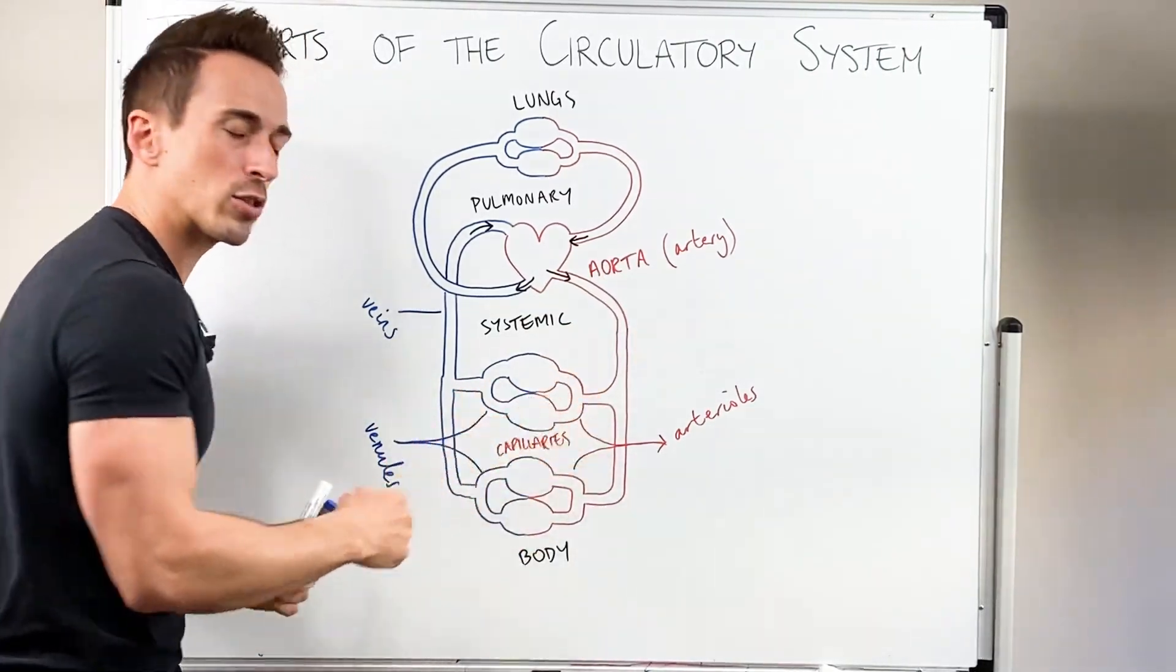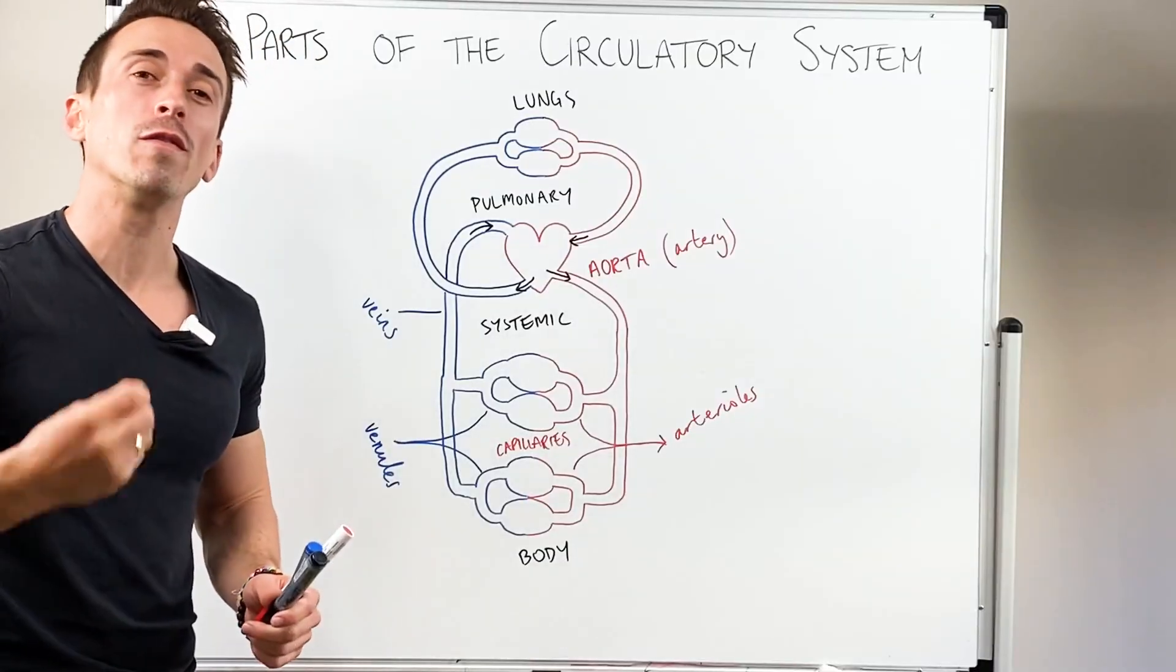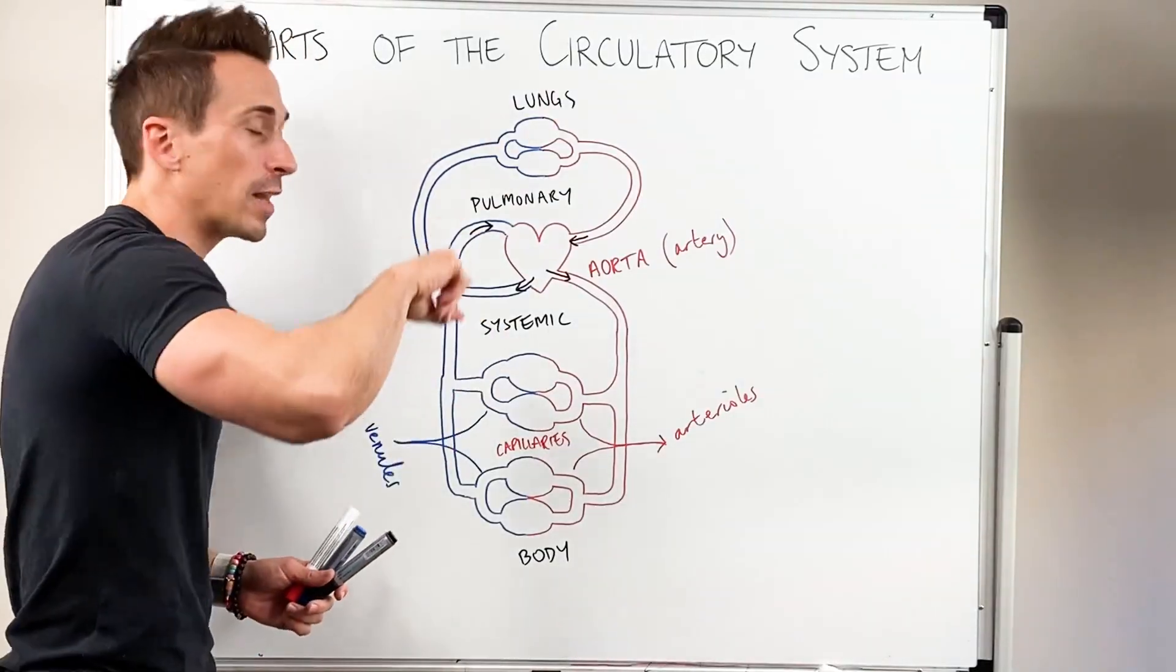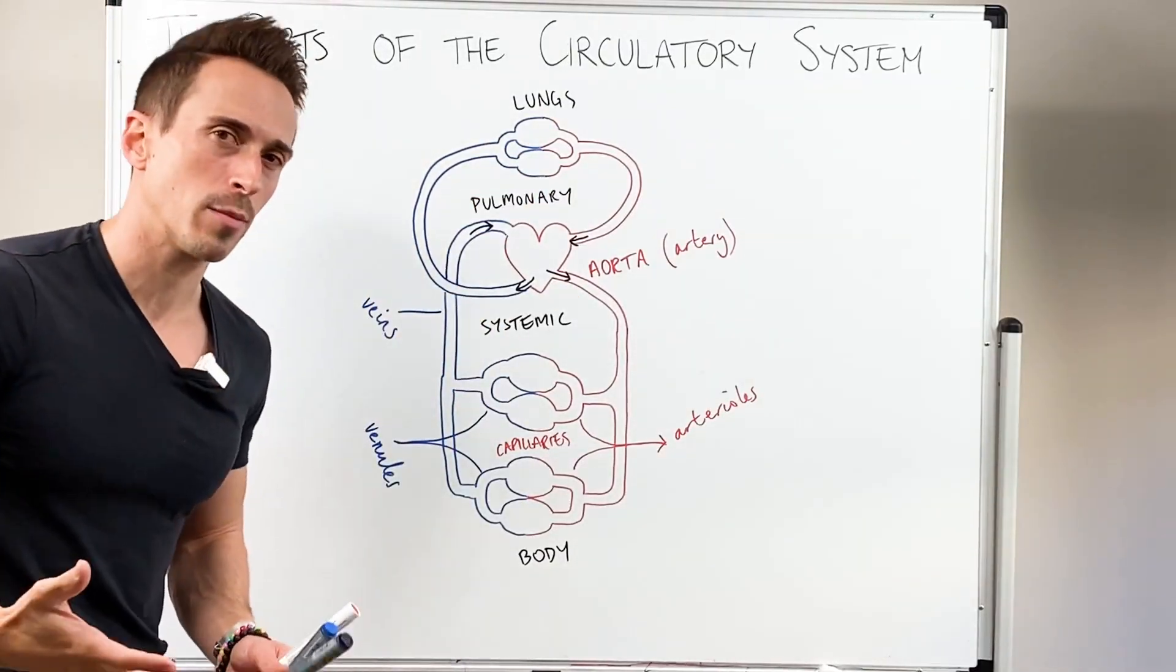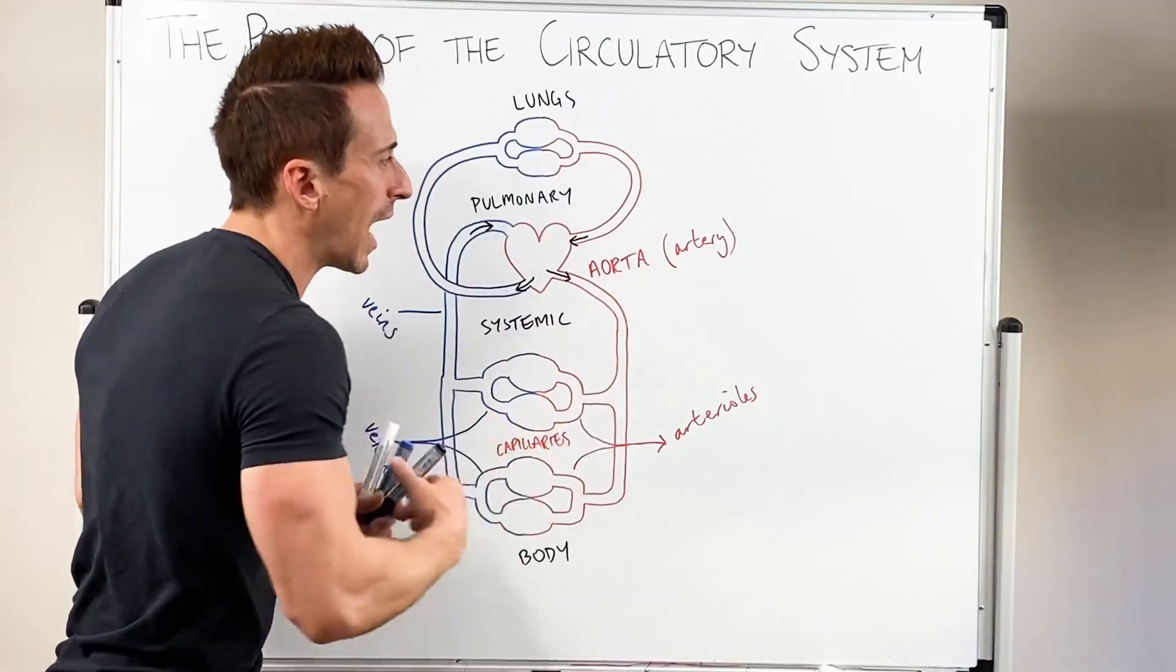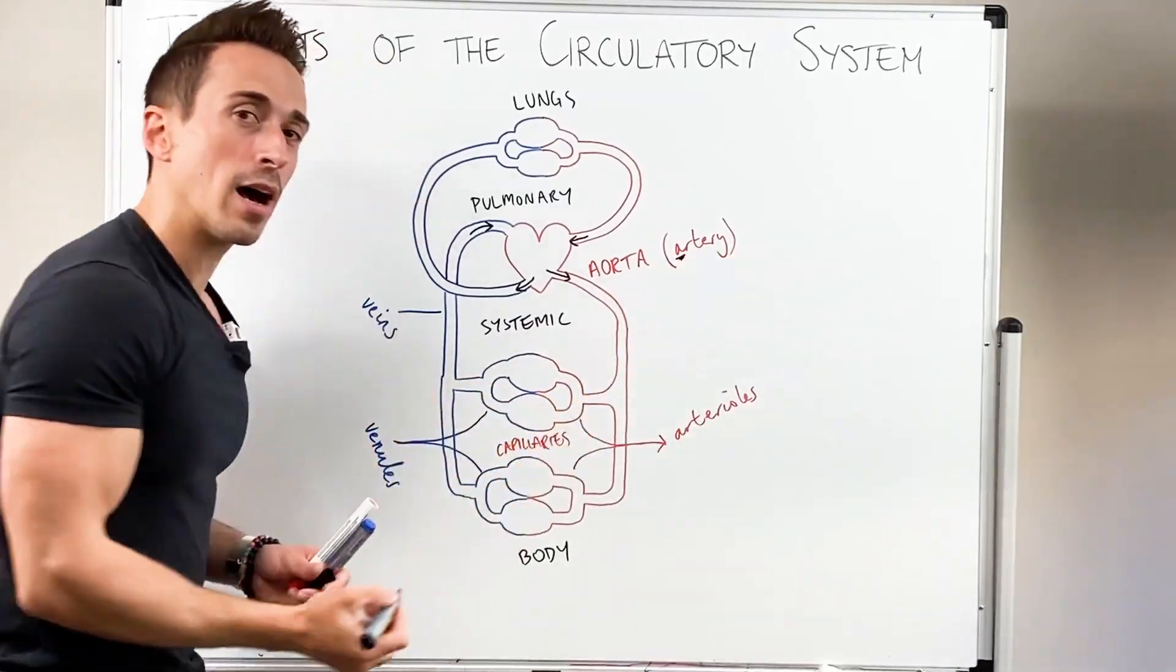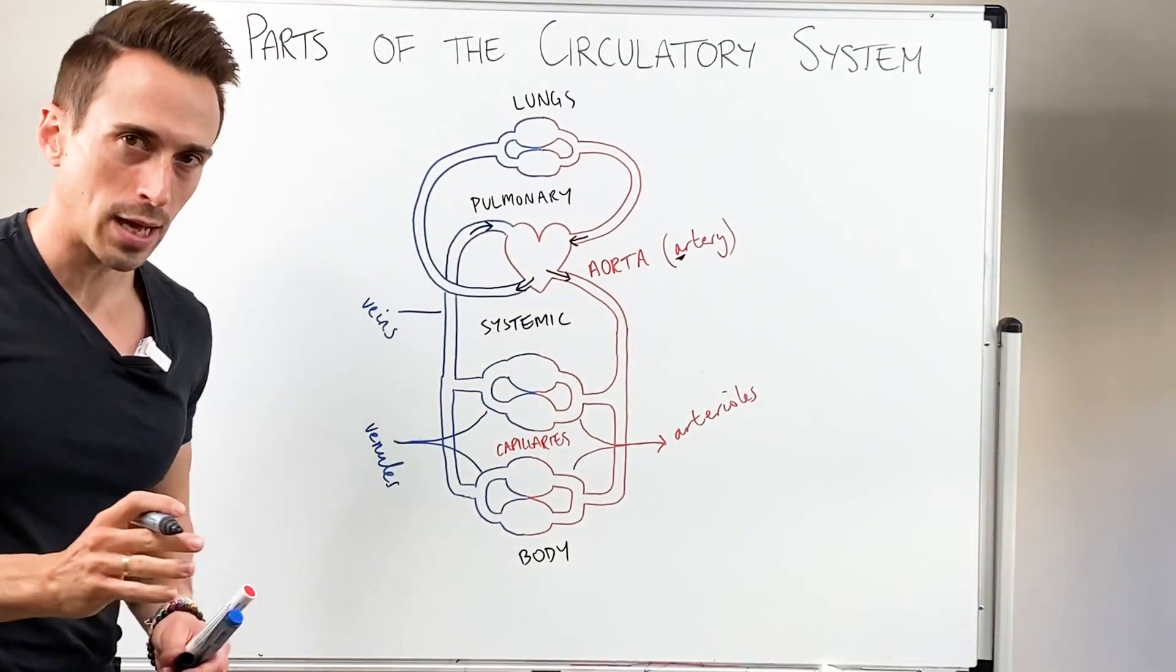So when we look at the systemic circulation, yes, all arteries are oxygenated, all veins are deoxygenated, but it's flipped for the pulmonary. So a better way to think about it is arteries, the A means away from the heart. And veins all go back towards the heart.